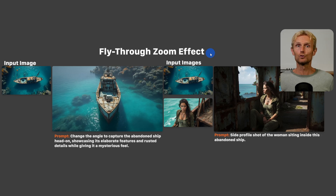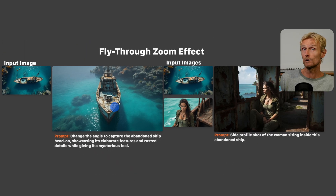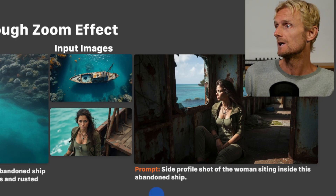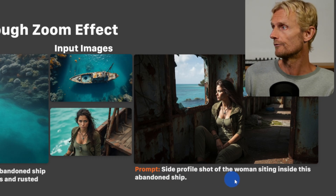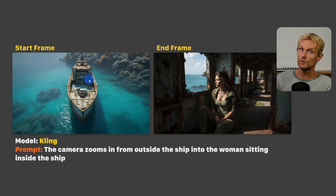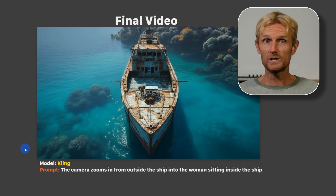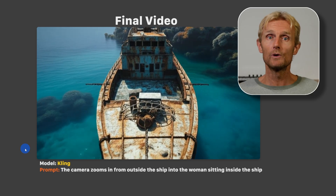Moving on to the fly-through zoom effect. In Nano Banana I used an input image with the prompt 'change the angle to capture the abandoned ship head on.' Then I used two input images with the prompt 'side profile shot of the woman sitting inside this abandoned ship.' With the start-to-end frame tool from Kling, I used the prompt 'the camera zooms in from outside the ship into the woman sitting inside the ship,' resulting in a shot that's a bit slow since I set the duration to 10 seconds.